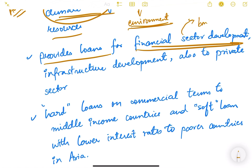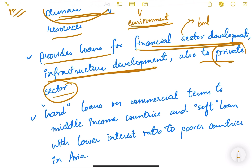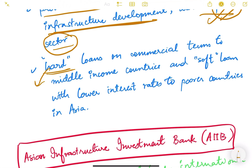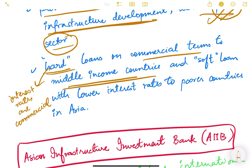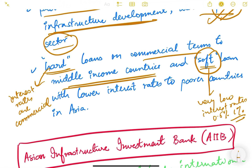ADB provides loans for financial sector development — meaning bond markets, share markets, equity markets — as well as infrastructure development and loans to the private sector. It provides hard loans on commercial interest rates to middle-income countries, and soft loans at very low interest rates, like 0.5% or 1%, to poorer countries in Asia.